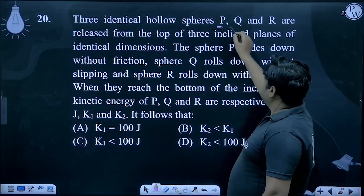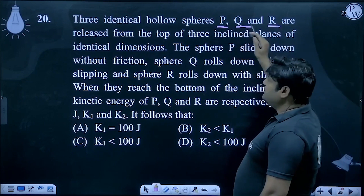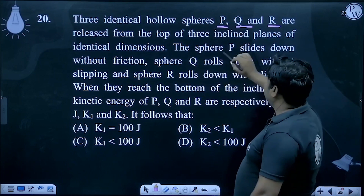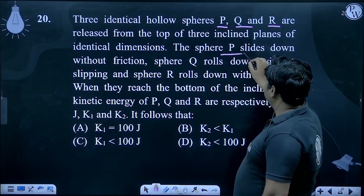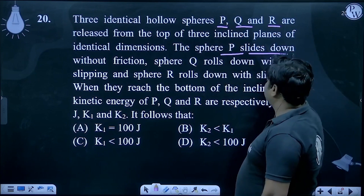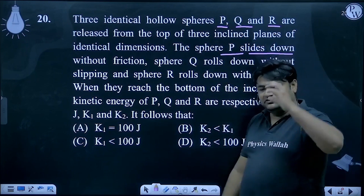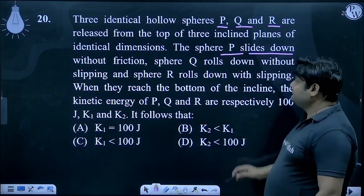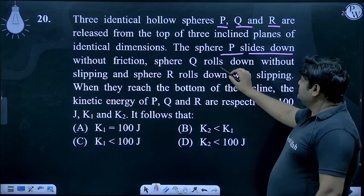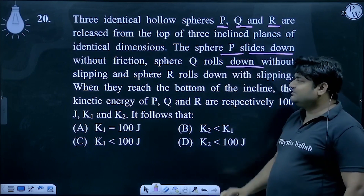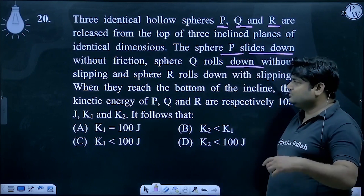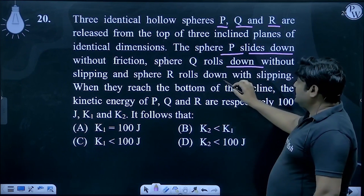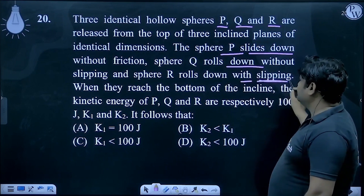Three hollow spheres are identical, so the moment of inertia is the same. Sphere P slides down without friction, so there is no rotational contribution. Q rolls down without slipping, and R rolls down with slipping.